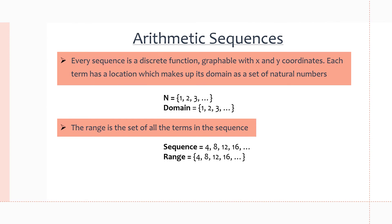Let's quickly look at the domain and range of an arithmetic sequence. As every sequence is a discrete function, meaning we can graph it on an x and y plot, the location of the terms — indicated by the subscripts — become the domain of the sequence. This means the sequence has a set of natural numbers as its domain, and natural numbers are basically just whole numbers: 1, 2, 3, and so on. So if the sequence has 20 numbers, the domain is 1 through 20.